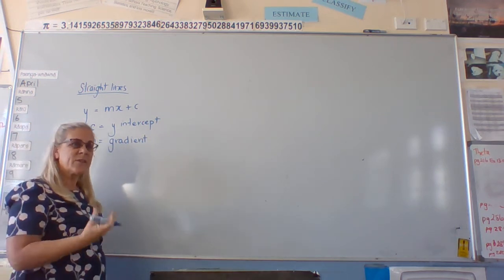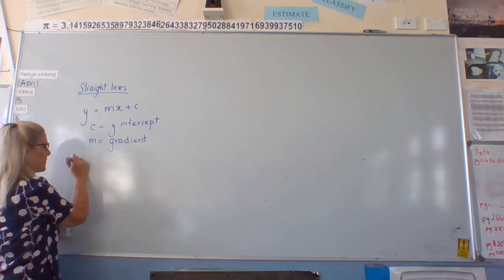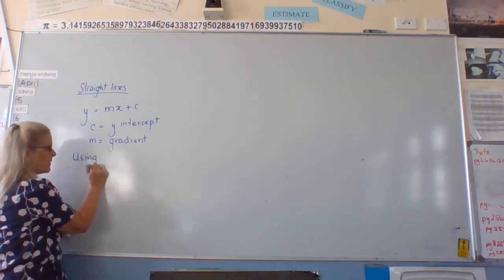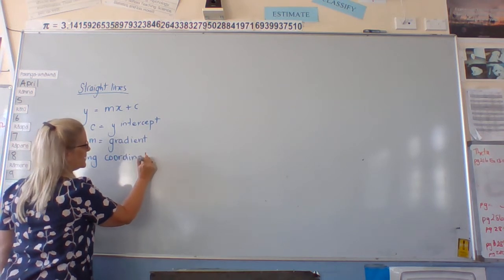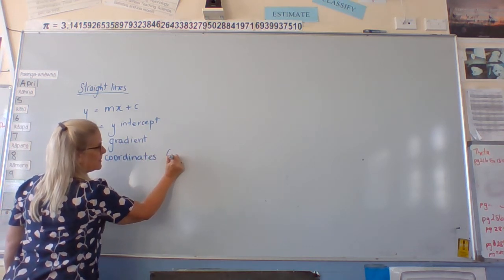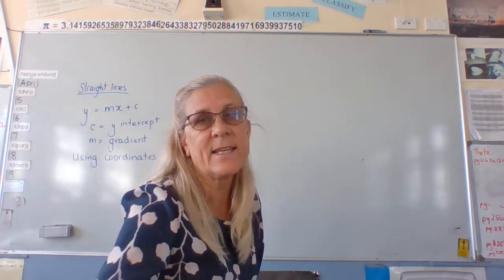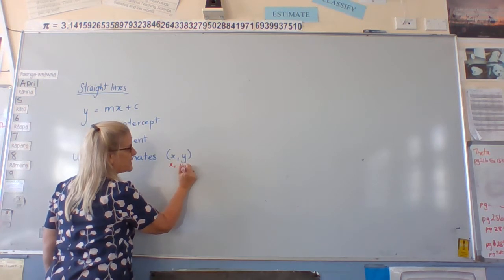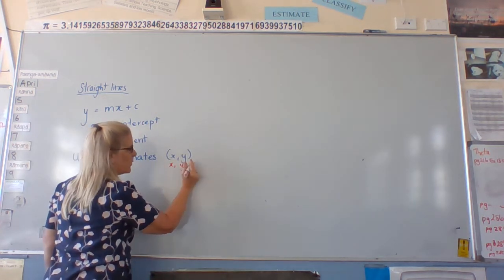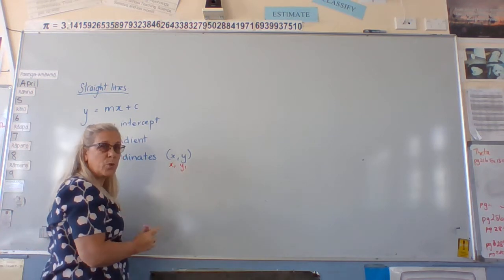But not always are we given the right information. So if we're given coordinates, generally we will label whatever they happen to be as x1, y1, or x2, y2 for the second point. So that means the first point, the x-coordinate, the y-coordinate.